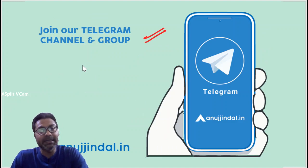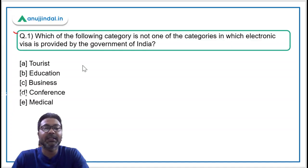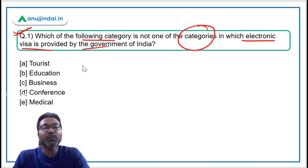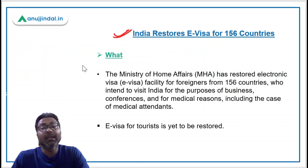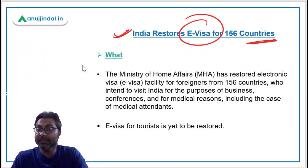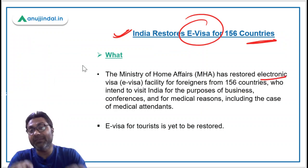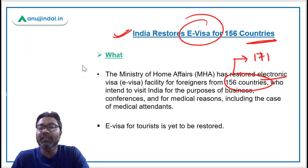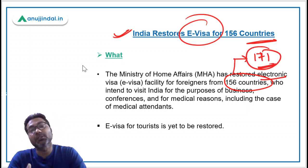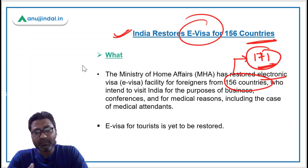Let's begin with the first question: which of the following categories is not one of the categories in which electronic visa is provided by the government of India? We are discussing this because recently India restored the e-visa facility for 156 countries. The Ministry of Home Affairs, headed by Mr. Amit Shah, has restored the electronic visa facility for 156 countries. Earlier this facility was available for 171 countries, but due to COVID restrictions the number decreased to 156.